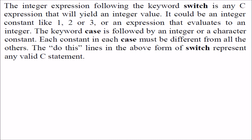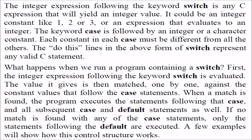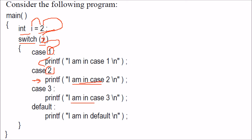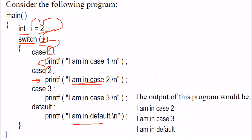Inside this switch you can only have integer values. The cases are matched one by one. If int i equals 2, this 2 will go into the switch. Since 2 does not match case 1, it will go to case 2. It is matching, so it should print 'I am in case 2'. But if we see the result, we find that 'I am in case 2', 'I am in case 3', and 'I am in default' — all three lines will be printed.